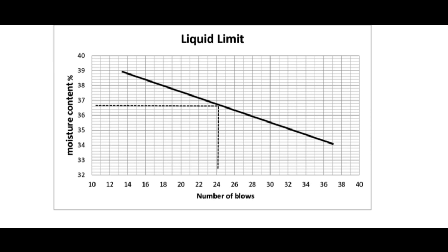Calculation for Liquid Limit: Plot the relationship between the water content and the corresponding number of drops N of the cup on a semi-logarithmic graph, with the water content as ordinates on the arithmetical scale and the number of drops as abscissas on a logarithmic scale. Draw the best straight line through the three or more plotted points.